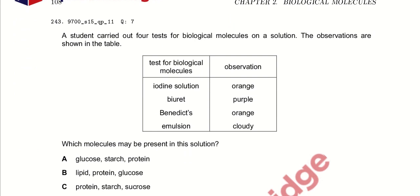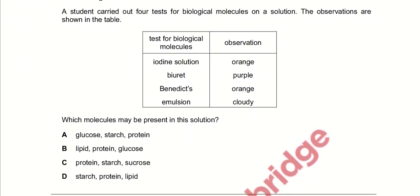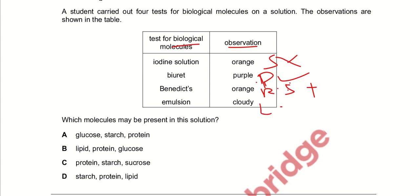A student carried out four tests for biological molecules on a solution. The observations are shown in the table. The iodine test gives no color change, meaning no starch is present — starch is absent. The biuret test gives purple color, meaning proteins are present. The Benedict's solution gives orange color, meaning reducing sugars can be present in a small amount. The emulsion test becomes cloudy, meaning lipids are present.